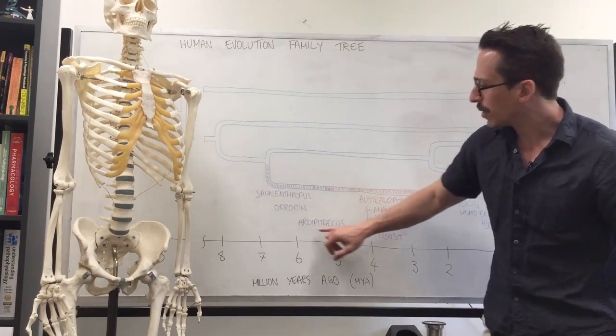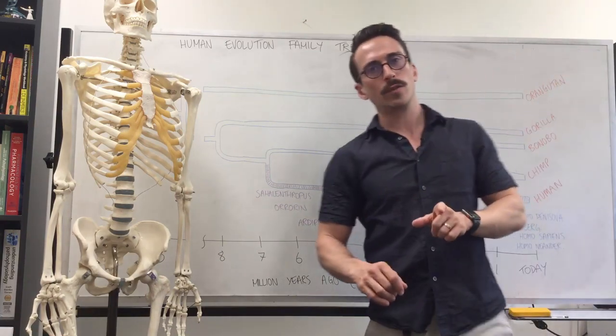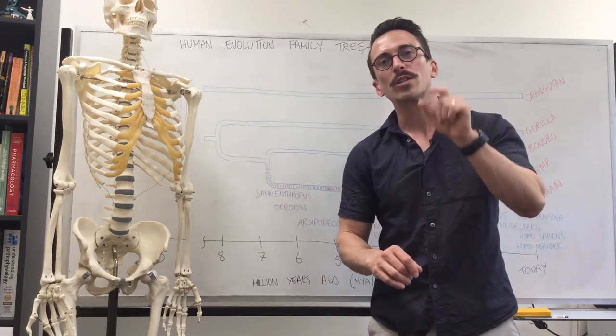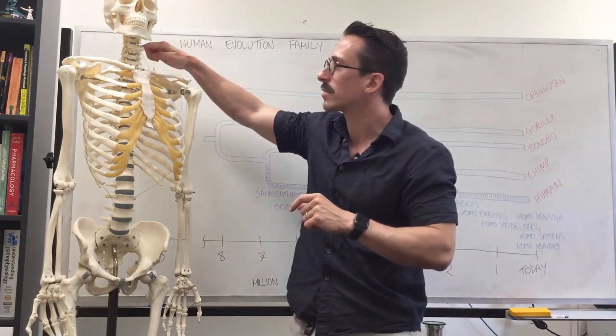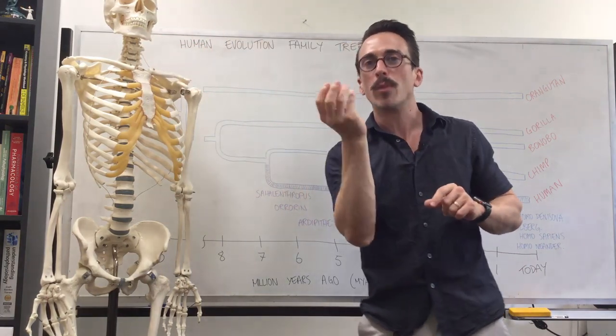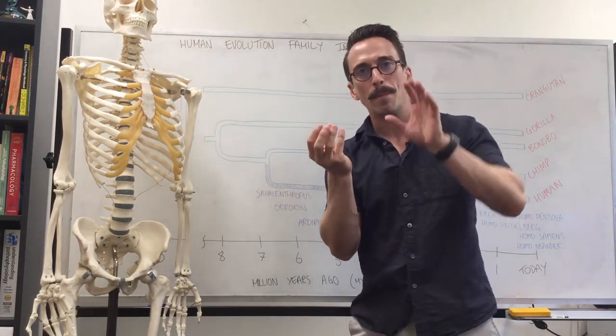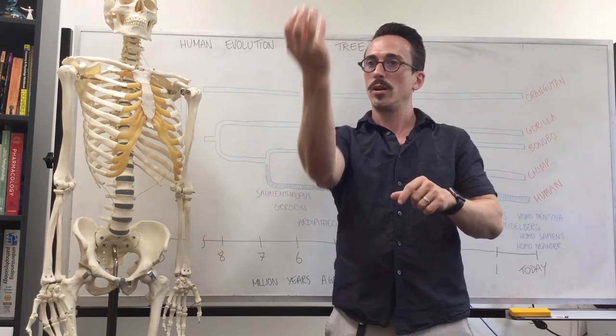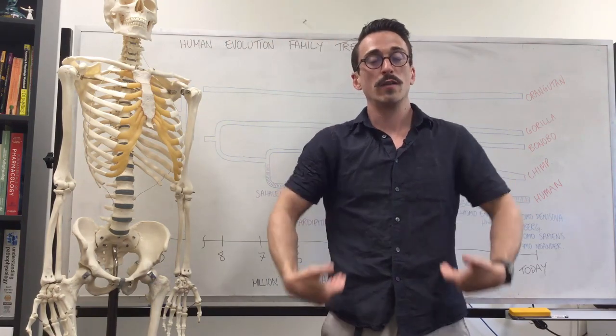How do we know this? Well, Sahelanthropus and Ardipithecus, we have skulls for, and what this skull shows us is that the hole in which the spinal cord moves into the skull is located directly at the bottom of the skull. This is called the foramen magnum. This is an indication that the spinal cord was vertical, an indication of bipedalism.